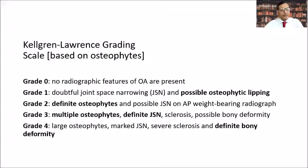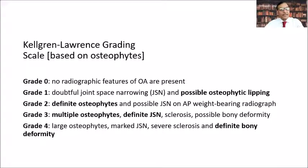There is a grading system based on X-rays called the Kellgren-Lawrence grading scale, from Grade 0 to Grade 4. Grade 0 means no radiographic features of OA. Grade 1 is doubtful joint space narrowing with possible osteophyte formation. Grade 2 shows definite osteophytes and possibly joint space narrowing on AP weight-bearing radiographs. Grade 3 has multiple osteophytes, definite joint space narrowing, sclerosis, and possible bony deformity. Grade 4 has definite bony deformity along with all other features.